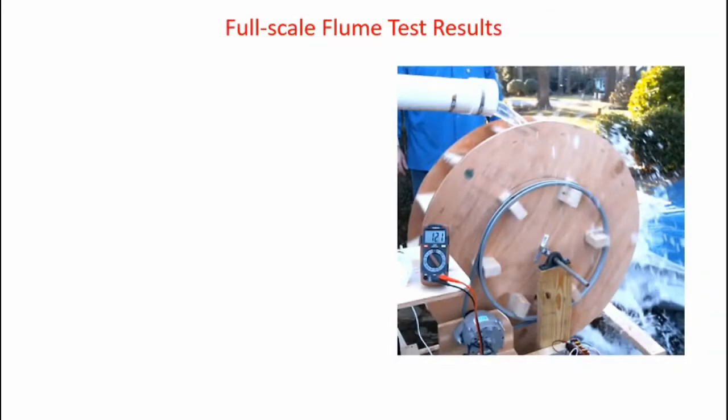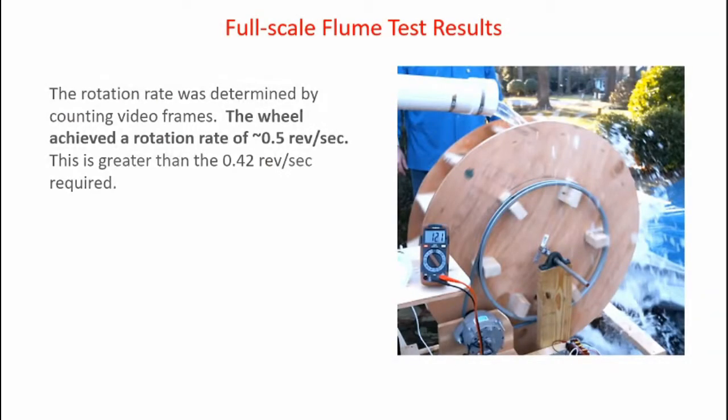Here's the final result of our full-scale water wheel test. We calculated the rotation rate of the water wheel by counting video frames once again. The wheel achieved a rotation rate of approximately 0.5 revolutions per second. This is greater than the 0.42 revolutions per second required to generate the necessary voltage, so that's certainly good. You can see from the voltmeter in the picture, we achieved 12.1 volts DC.